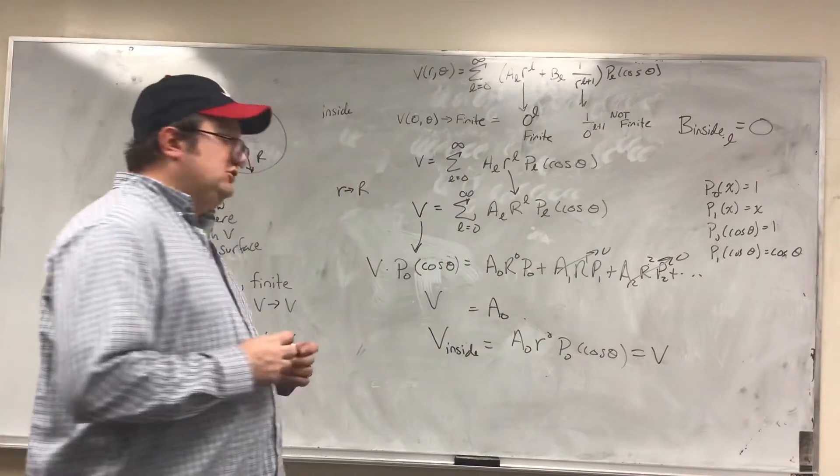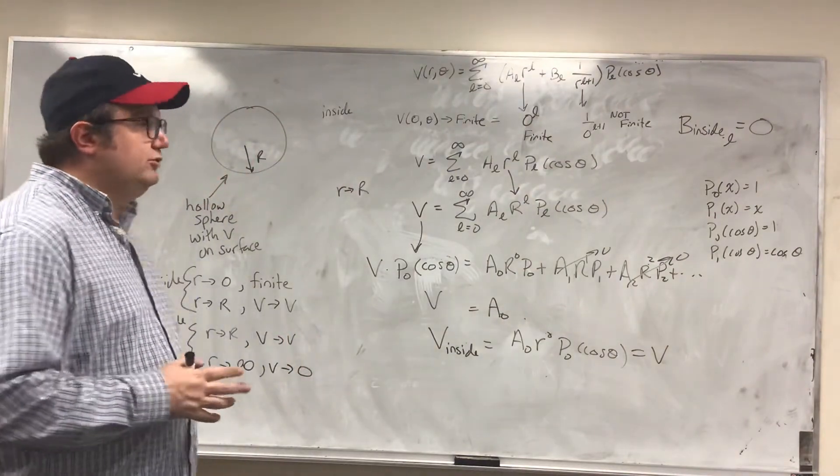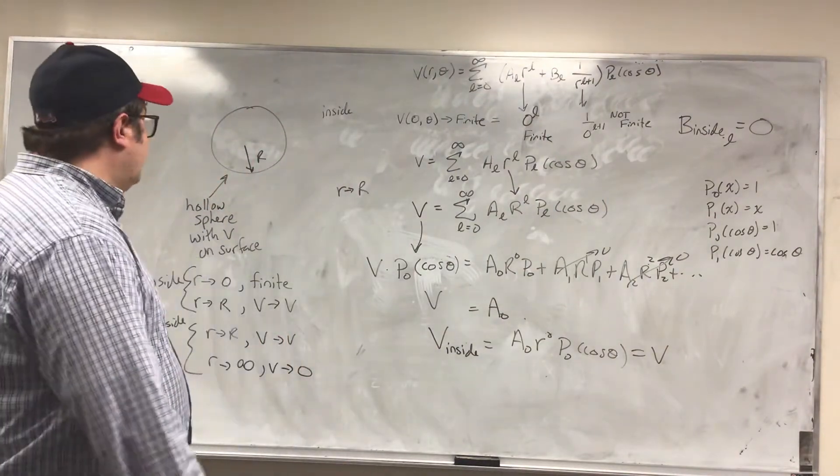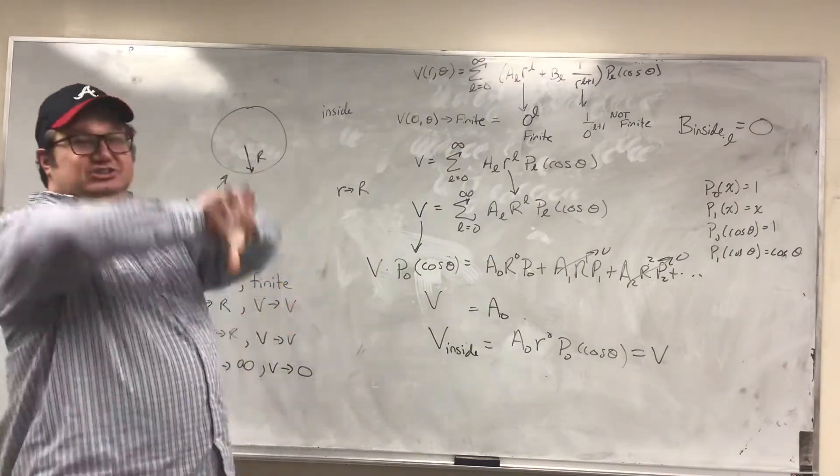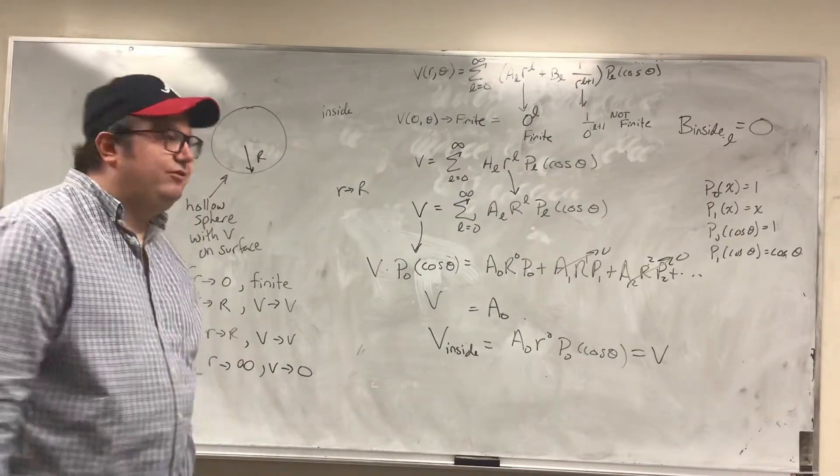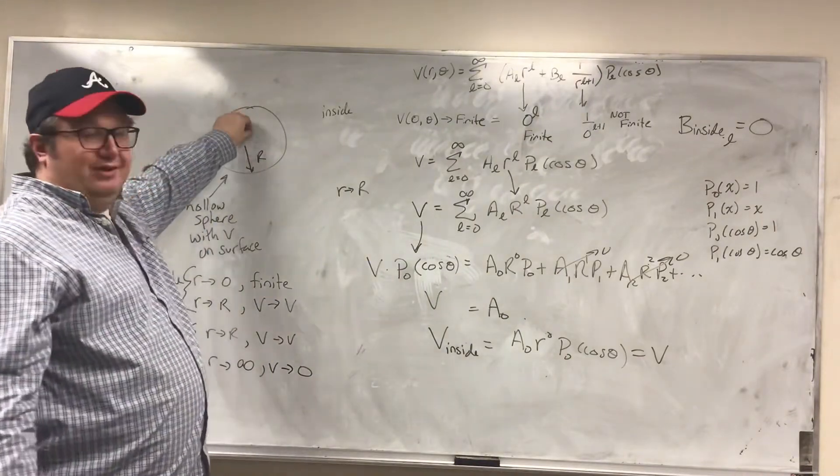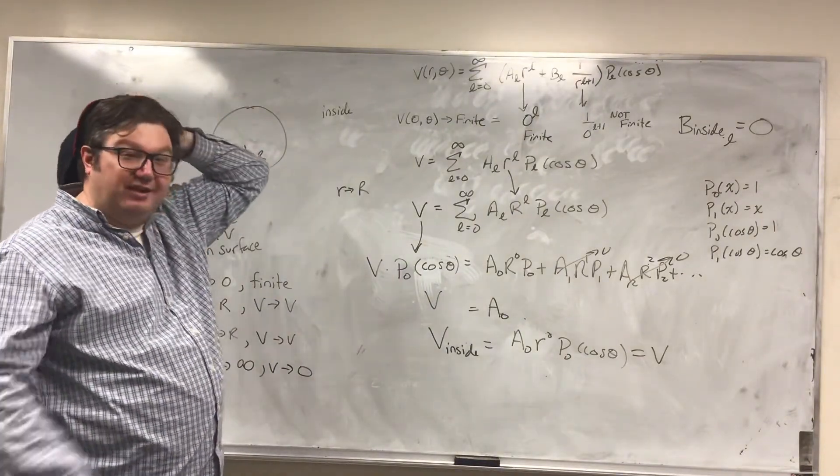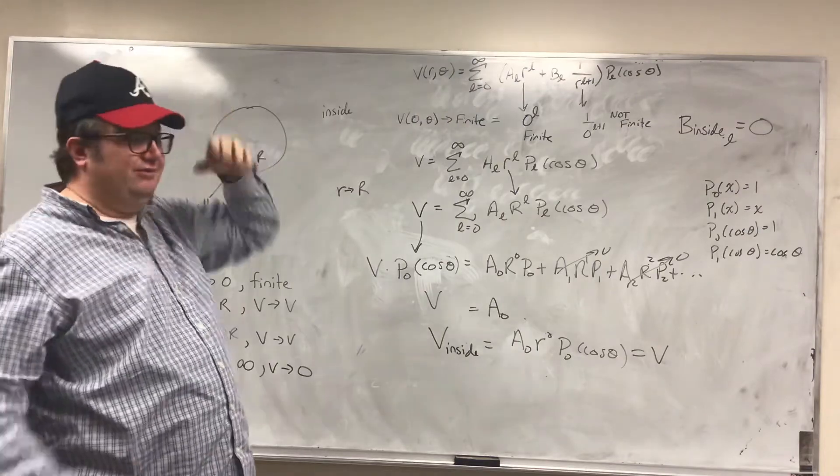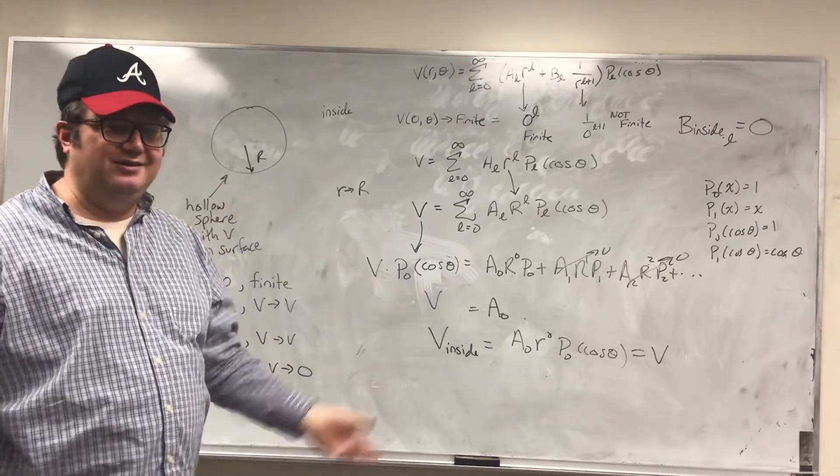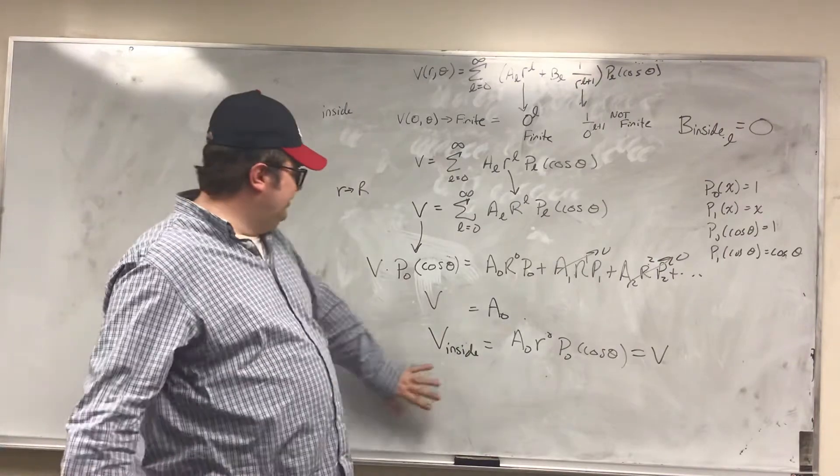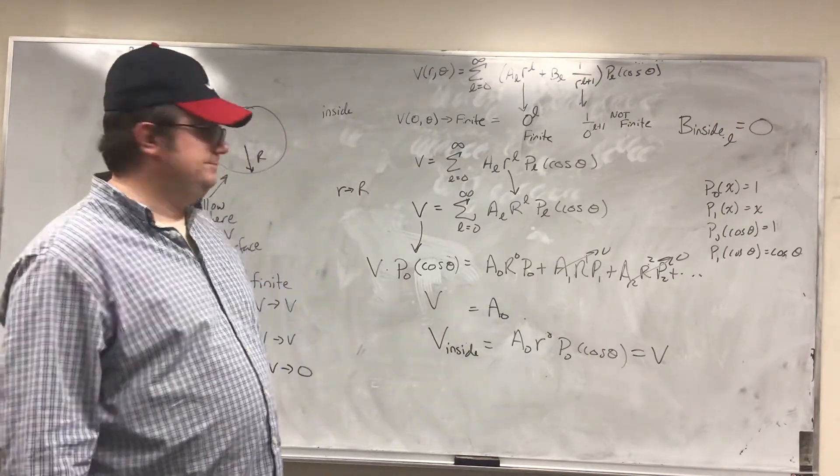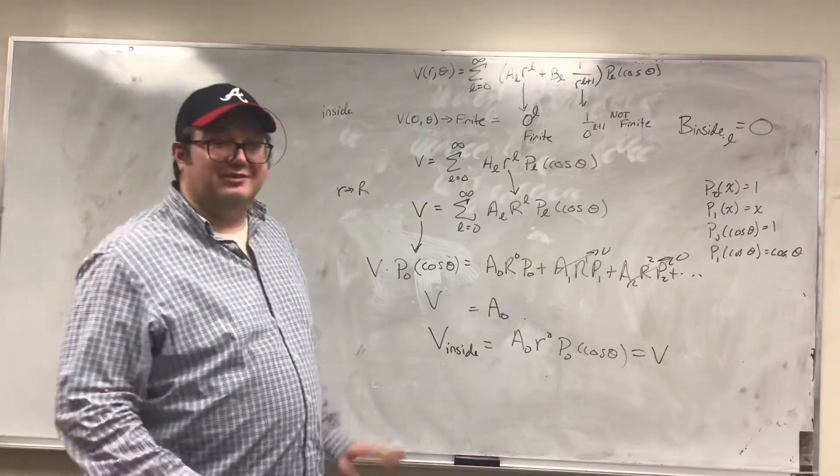Now, that should make sense from all the work that we were doing when we were numerically solving the Laplace equation, which said that the voltage is just equal to the average of the stuff around it. So if you're inside of this thing and the entire walls are equal to V, if I take the average of the stuff outside, it's going to be V. So that's going to be V everywhere. So inside, the voltage is V. Let's look at the outside.